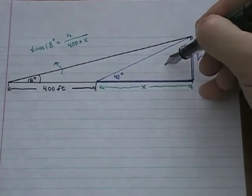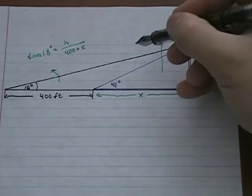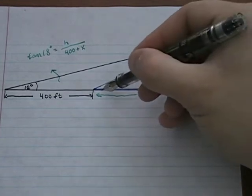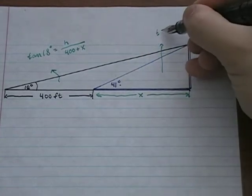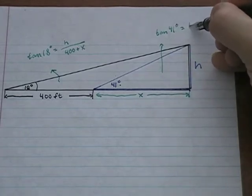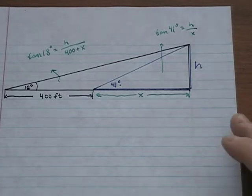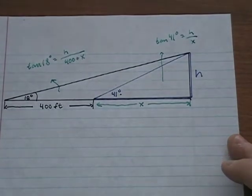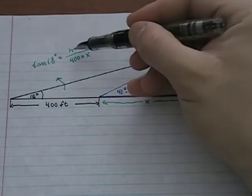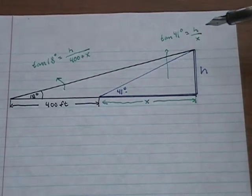Now I'll write an equation for the blue triangle. Again, I have an angle, the opposite side h, and the adjacent side x. So it's also a tangent equation: tangent of 41 degrees equals h over x.